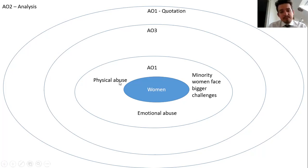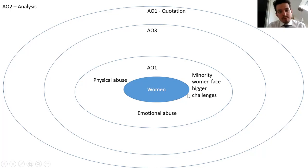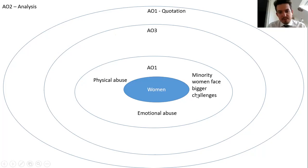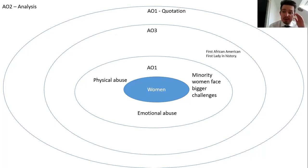So in your first circle you're putting the basic paragraph summary — your three paragraphs of focus: physical abuse, emotional abuse, and minority women facing bigger challenges. Then in your next circle you need to put contextual factors linked to these. For example, for Michelle Obama, one very relevant contextual factor is that she was the first African-American First Lady in history, which is important because that came comparatively late given how many First Ladies there have been.